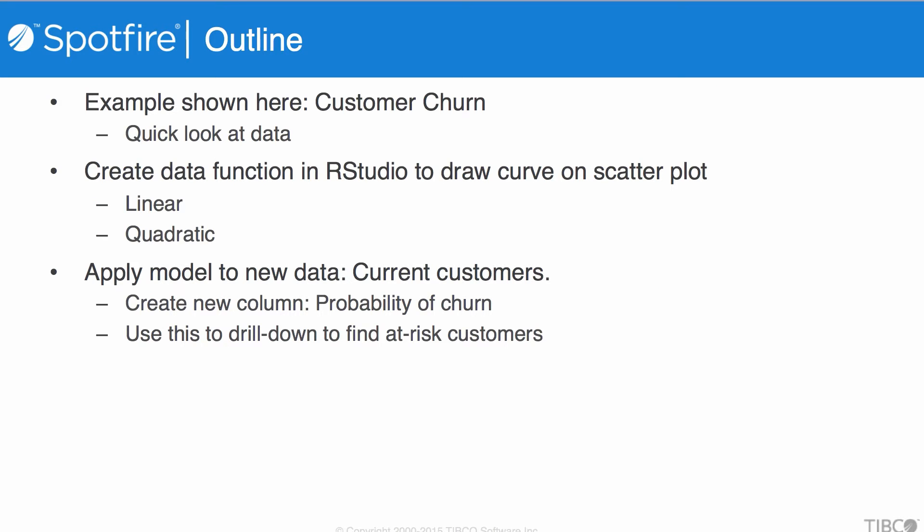I'll be using some customer churn data as an example. I'll first take a quick look at the data, then use RStudio to create a data function that will draw a curve on a scatterplot in Spotfire to distinguish churn from non-churn customers — first using a linear, then a quadratic function. In the second part, I'll apply this model to new data of current customers to create a column showing the probability of churn, then use Spotfire to drill down and find at-risk customers.